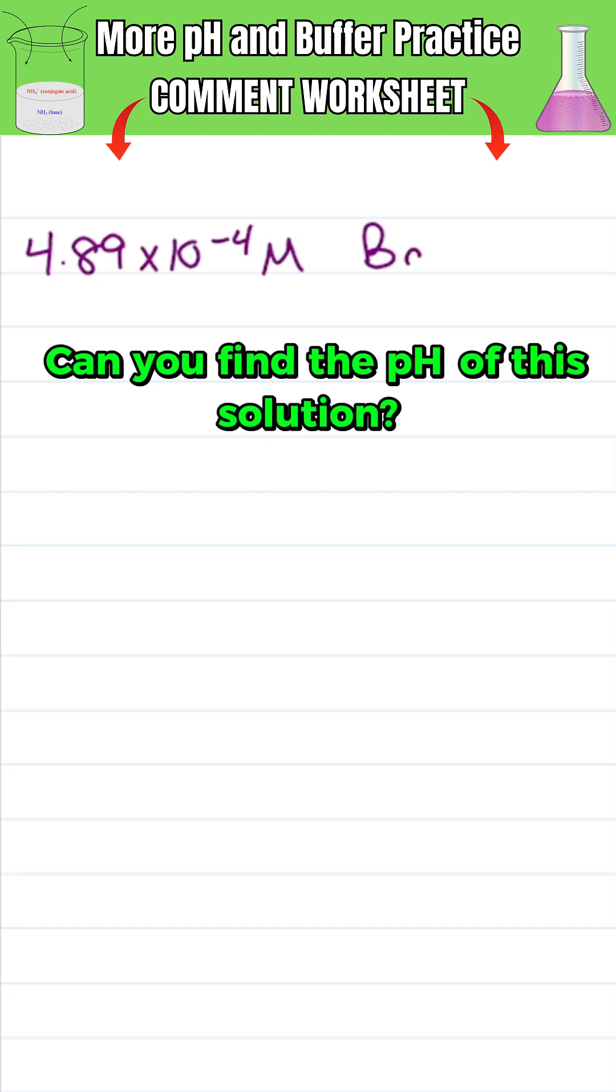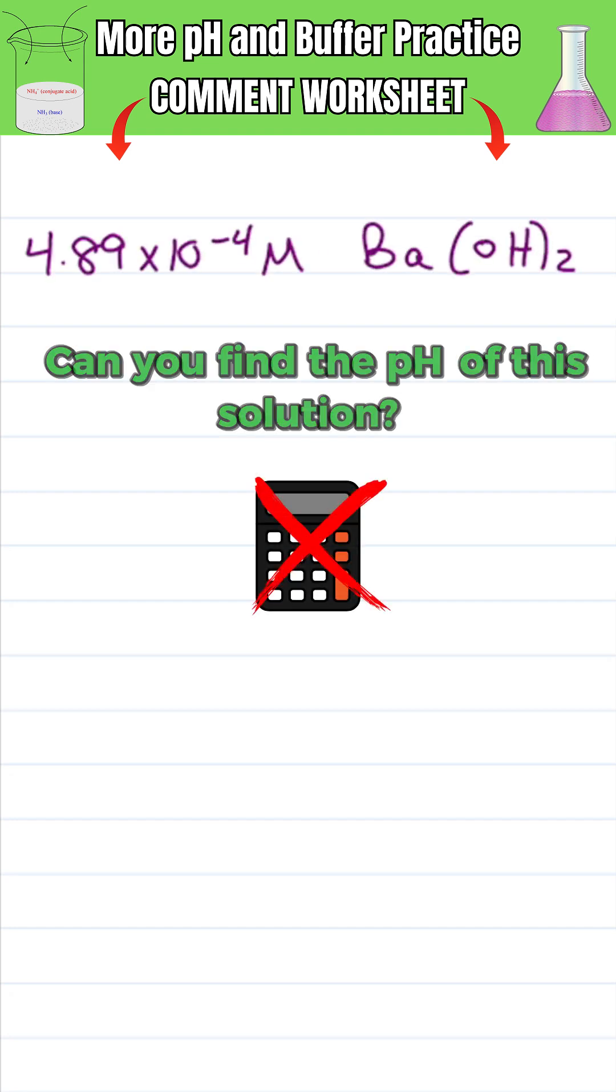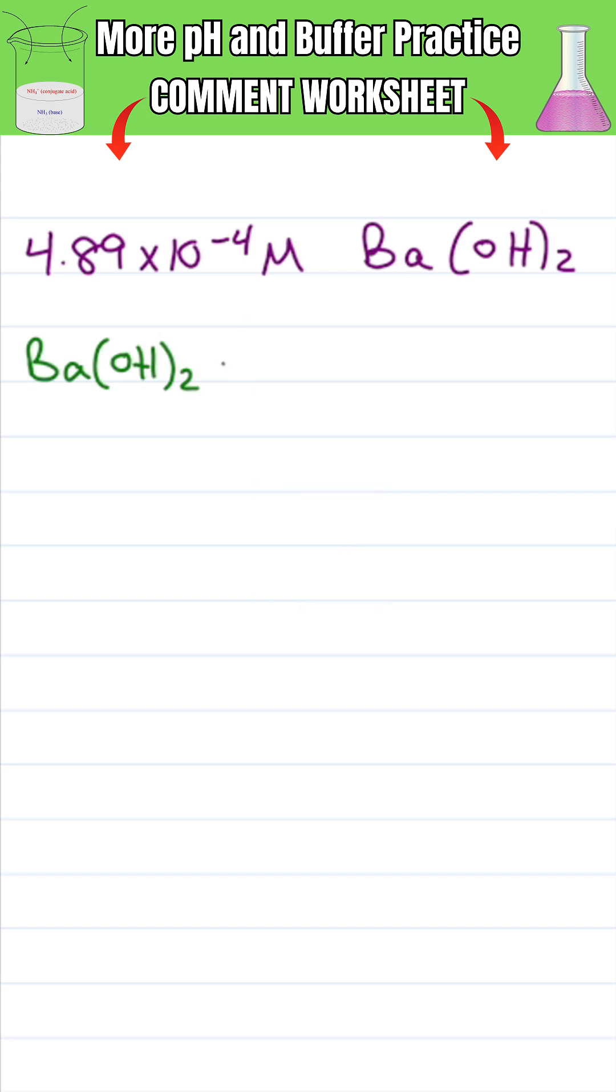Can you find the pH of this solution without a calculator? Barium hydroxide is a strong base for near a hundred percent dissociation. To give me this many OH minus? Not quite.